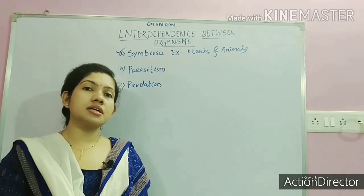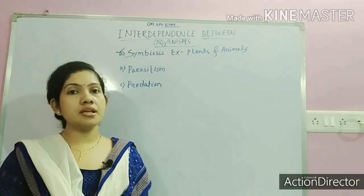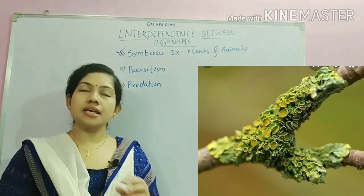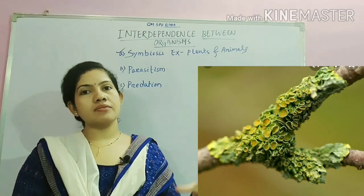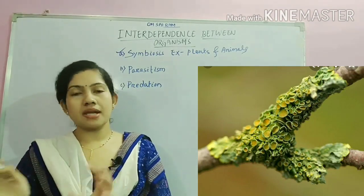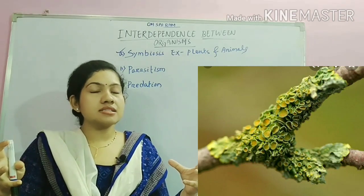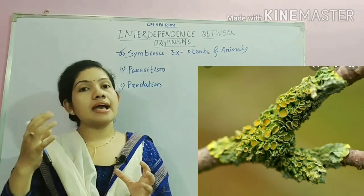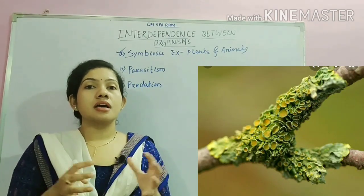Another simple example of symbiosis is lichens. Lichens are the symbiotic association between algae and fungi. Fungi are heterotrophs — they cannot prepare their food as they do not have chlorophyll pigment. Algae are autotrophs, meaning they can prepare their own food. So fungi and algae stay together: fungi provide shelter to algae, and algae provide nutrition or food to the fungi.